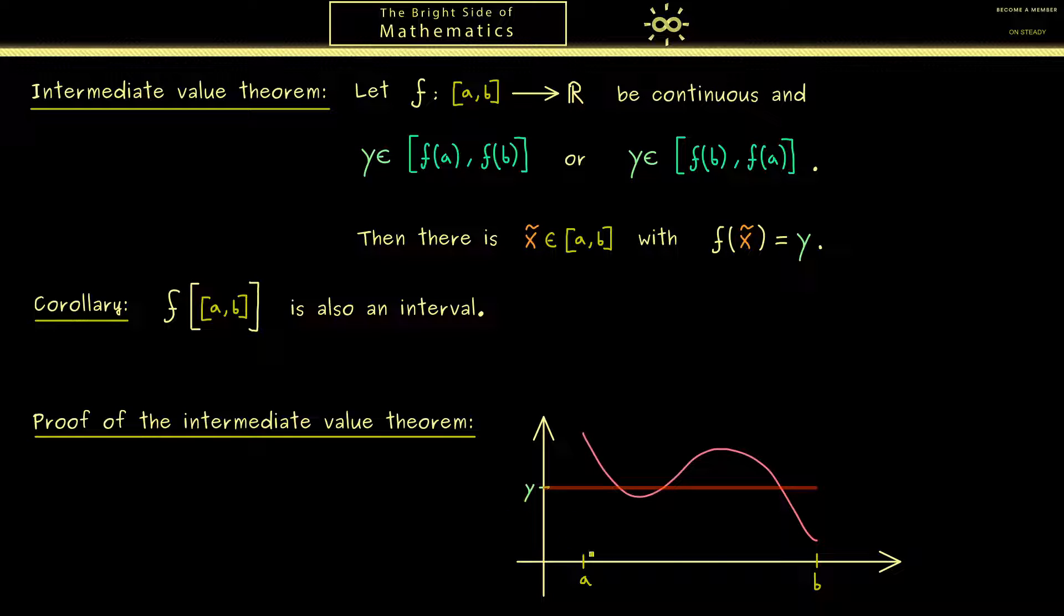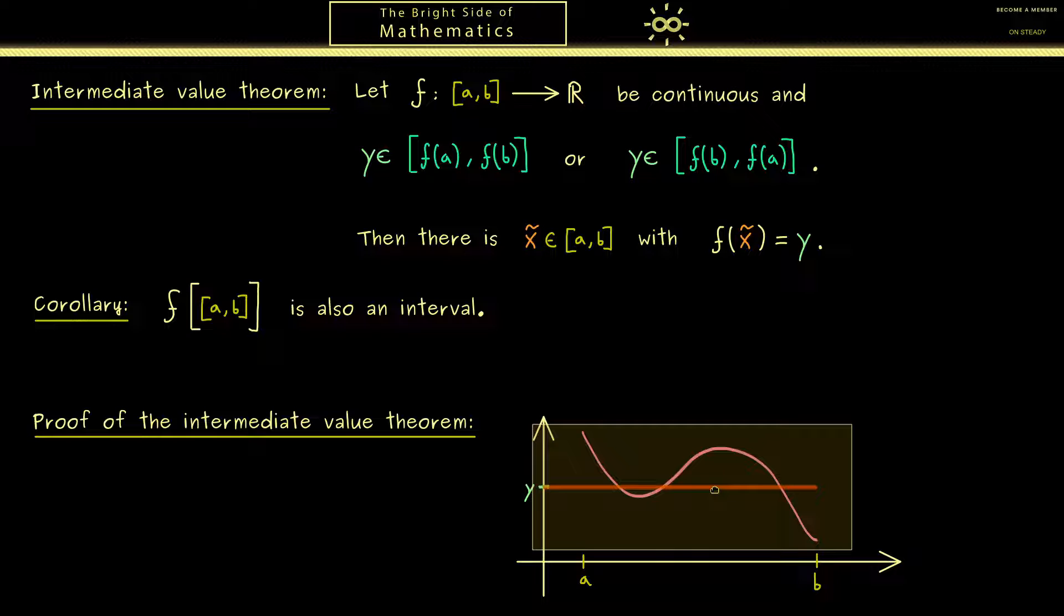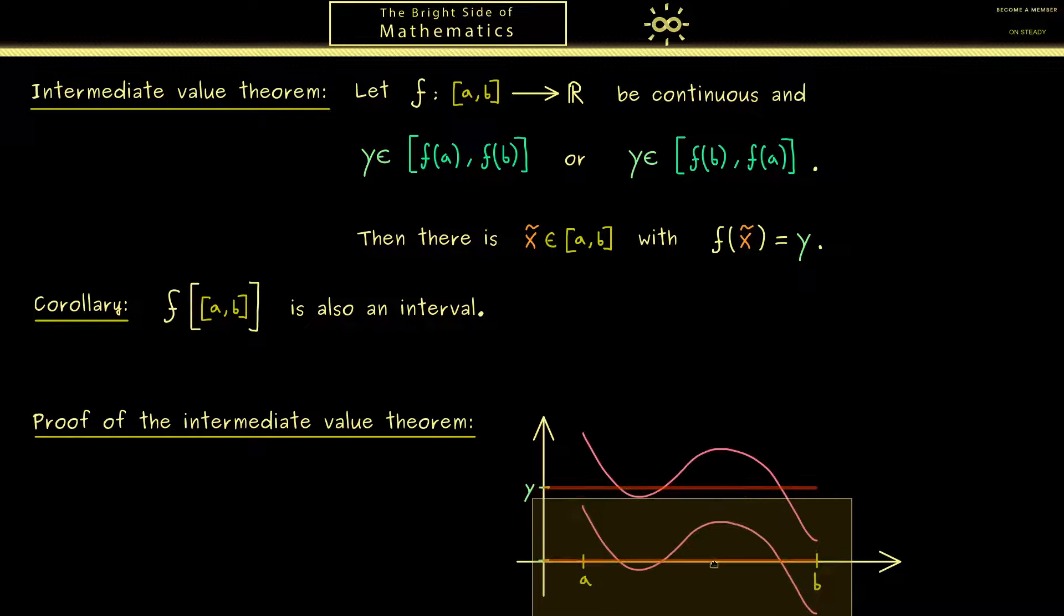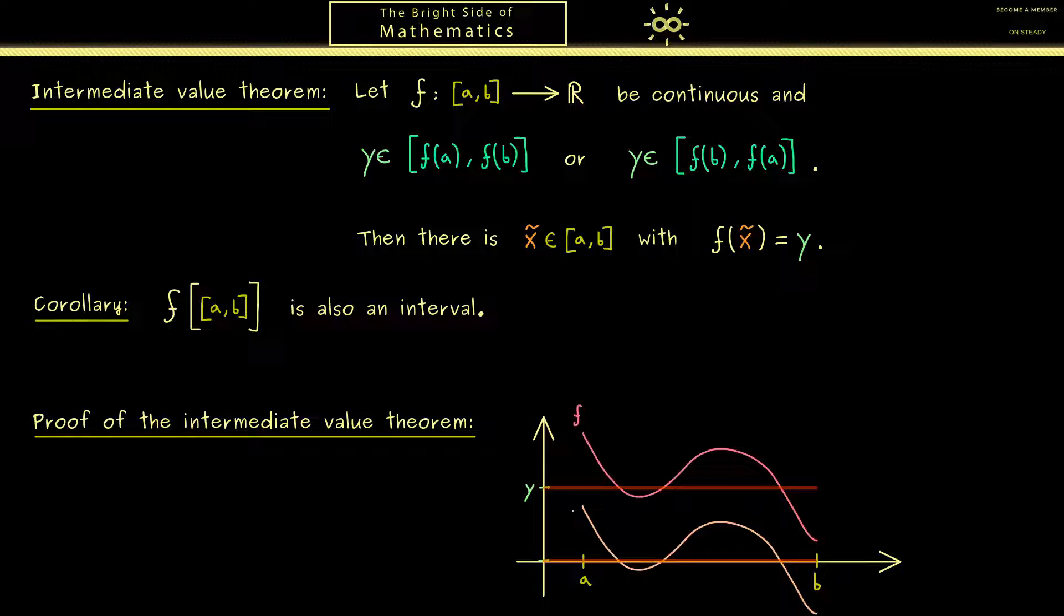When I say we want to normalize the problem it means it would be nice to have this y at 0. We could just do that so we take the whole function and shift it to 0. Simply as that we get a new function we could call g. Now what you should see is that the problem for searching such an x tilde stays exactly the same, but now we search for zeros. In summary we simply define a new function g, which is simply f minus the value y.